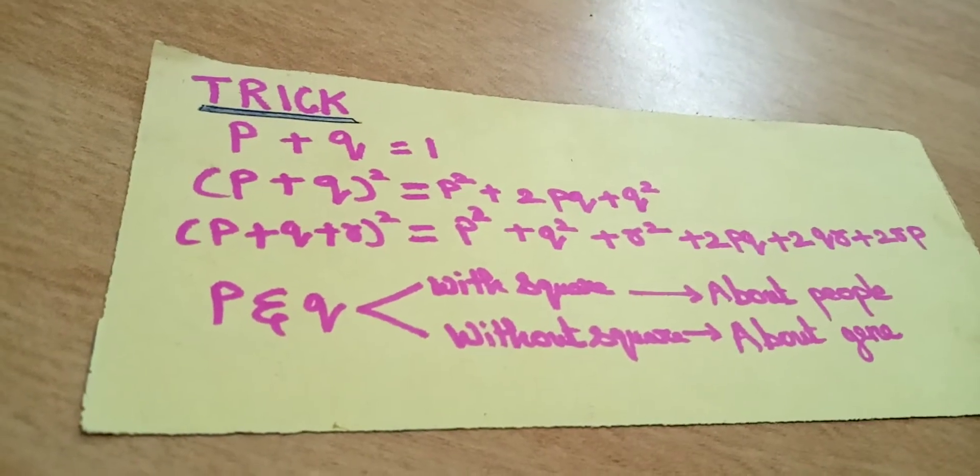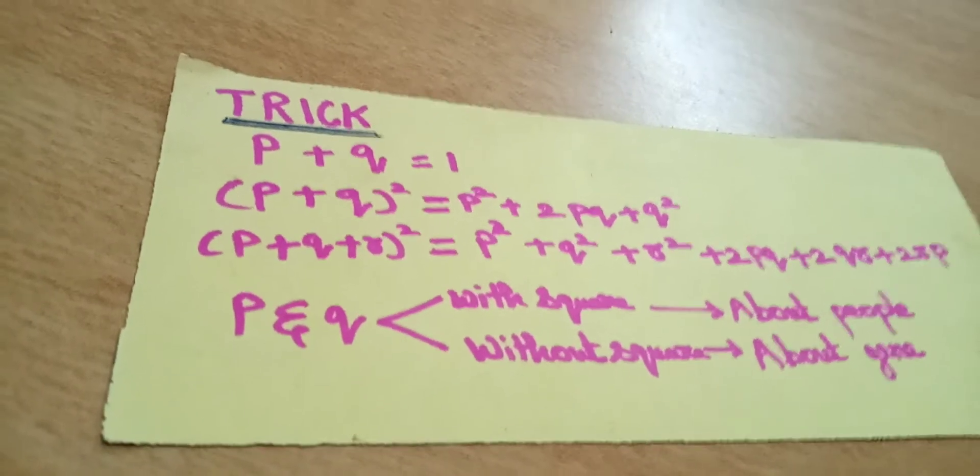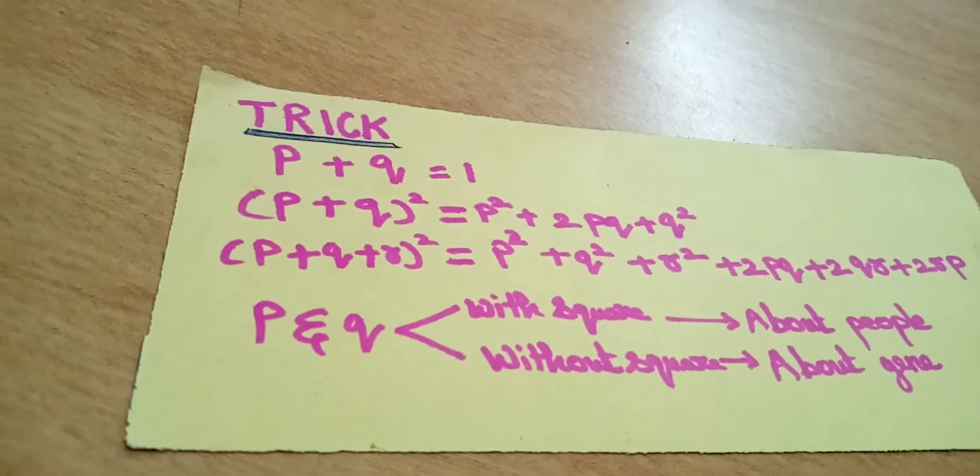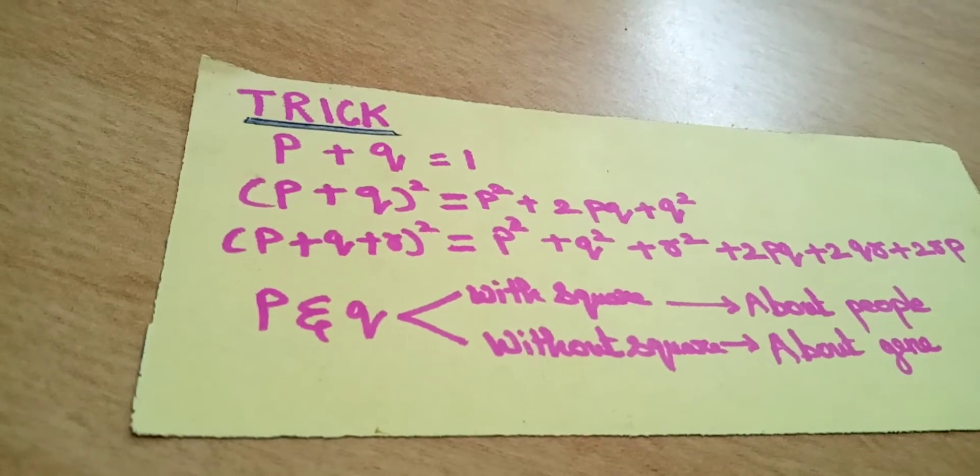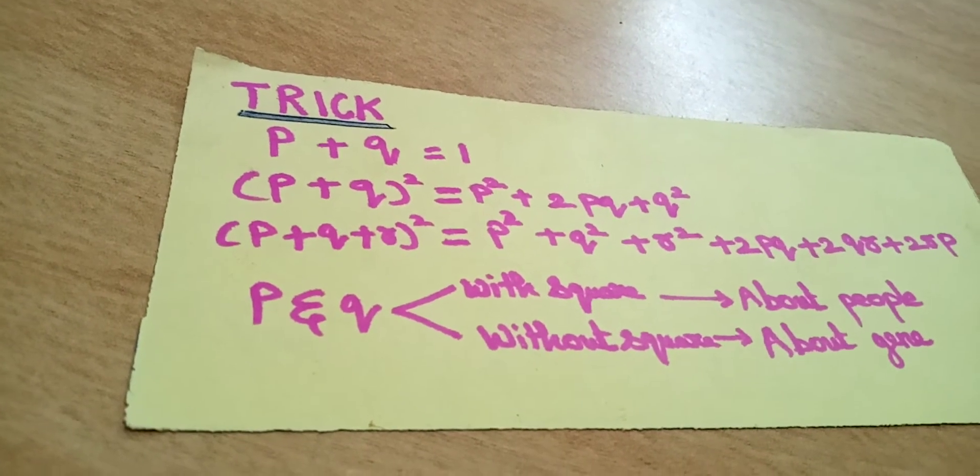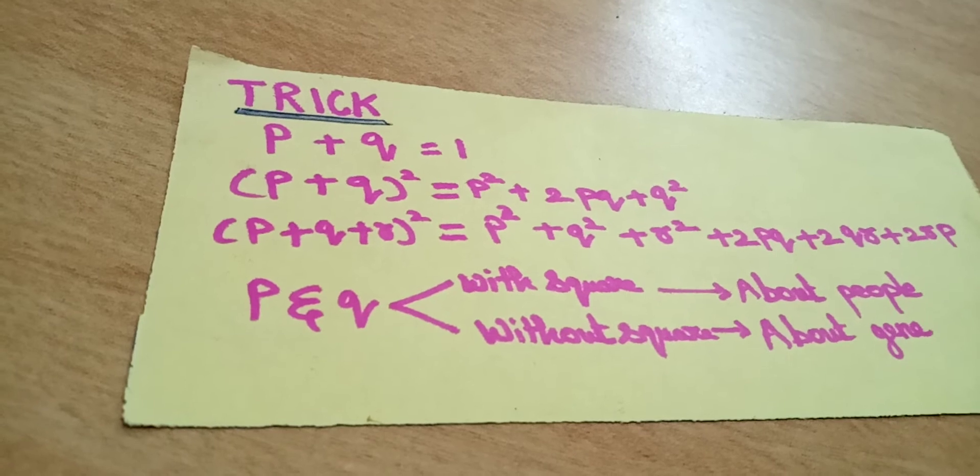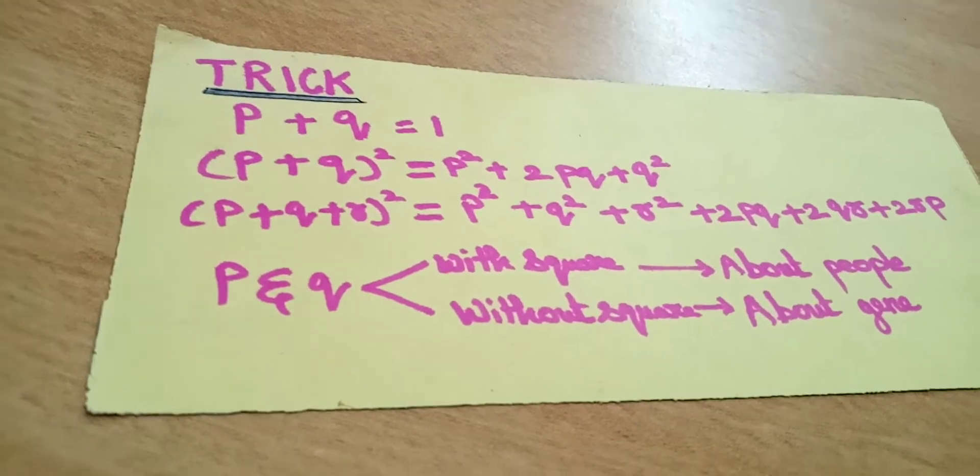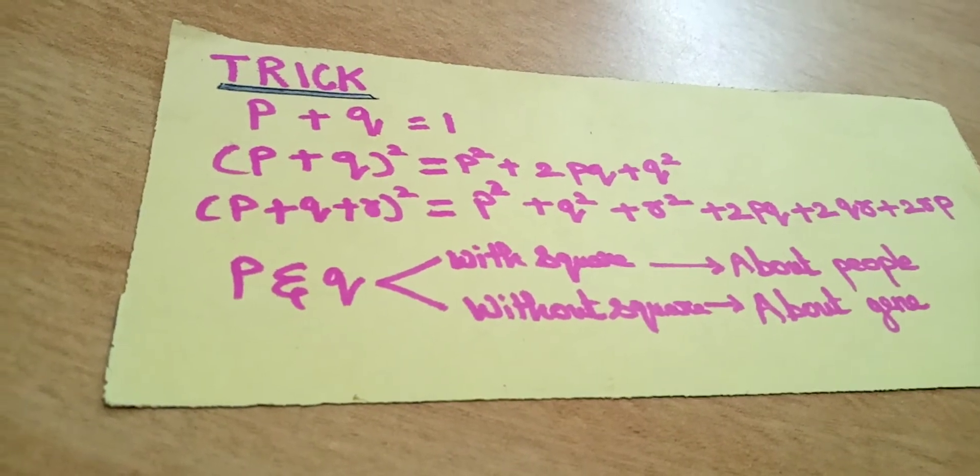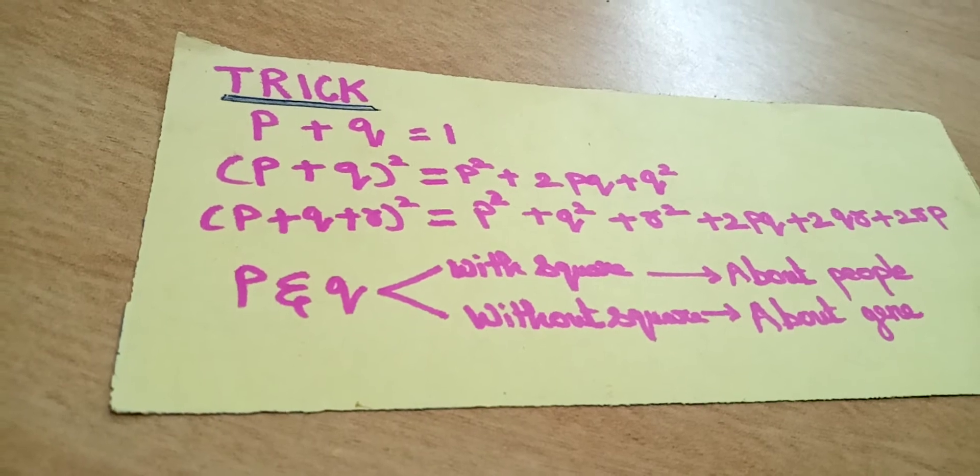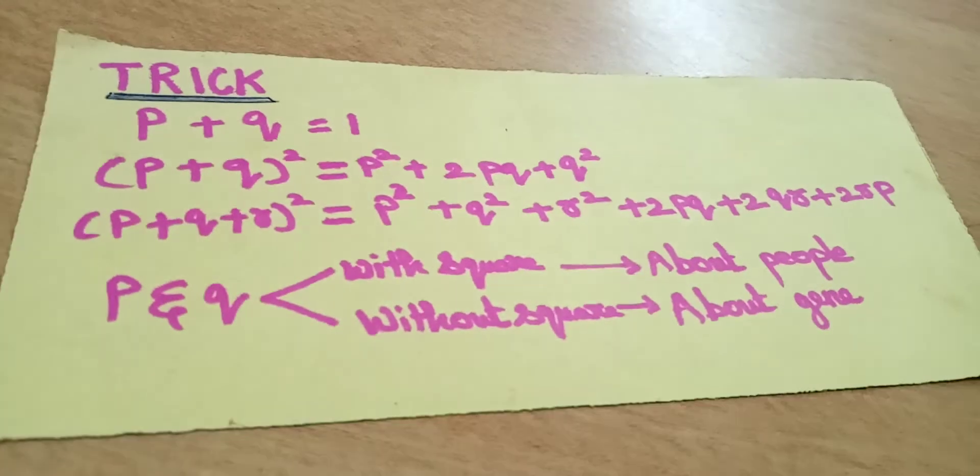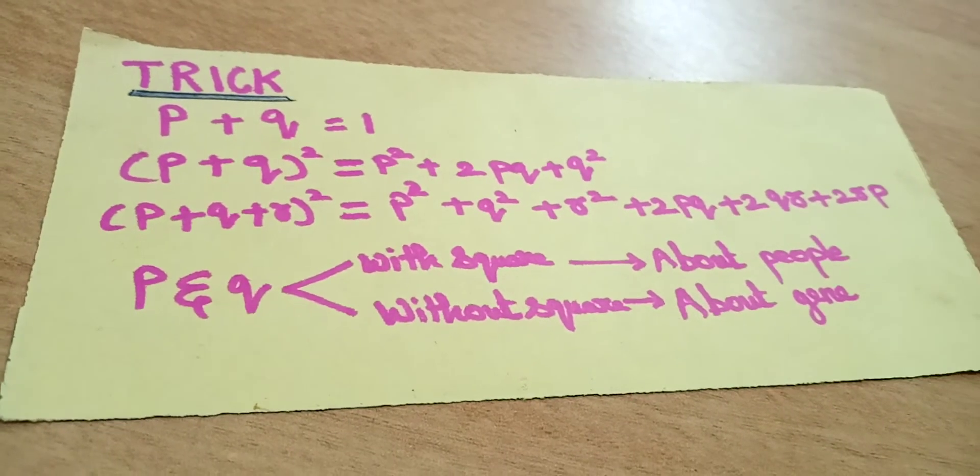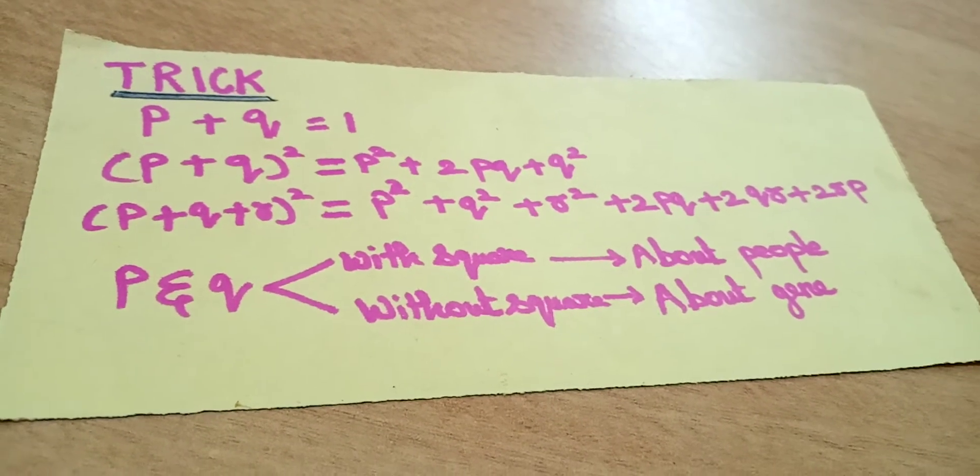Let's go to the trick. Hardy-Weinberg gave the main formula: P plus Q equals 1. We can write it as (P + Q)² = P² + 2PQ + Q². If they give three alleles, we can use (P + Q + R)² = P² + Q² + R² + 2PQ + 2QR + 2RP.